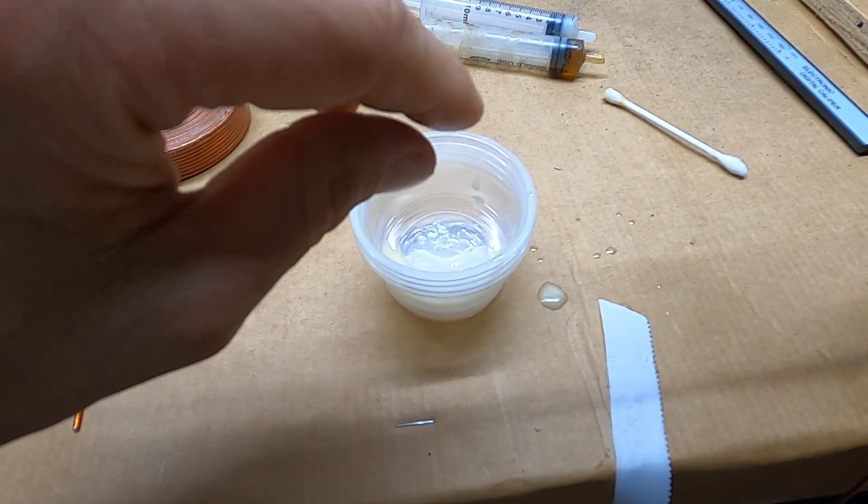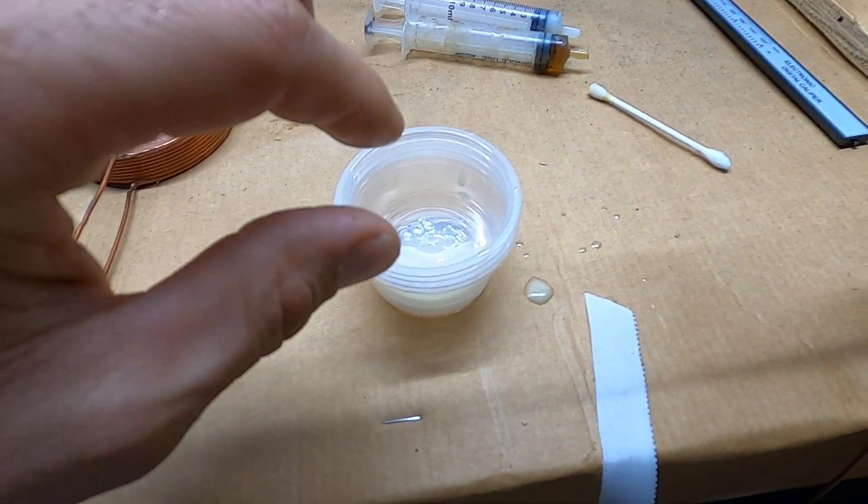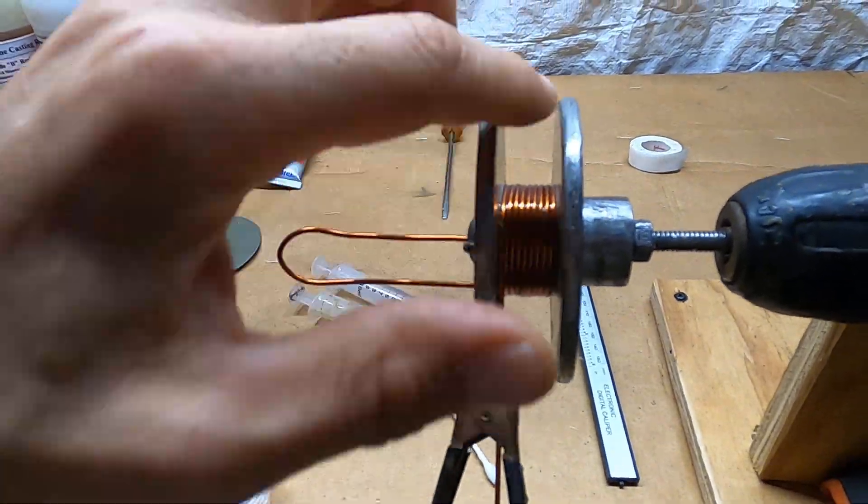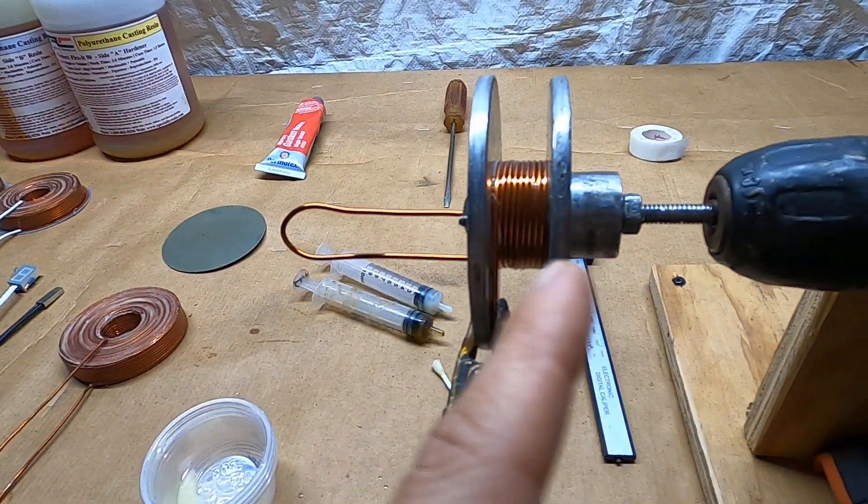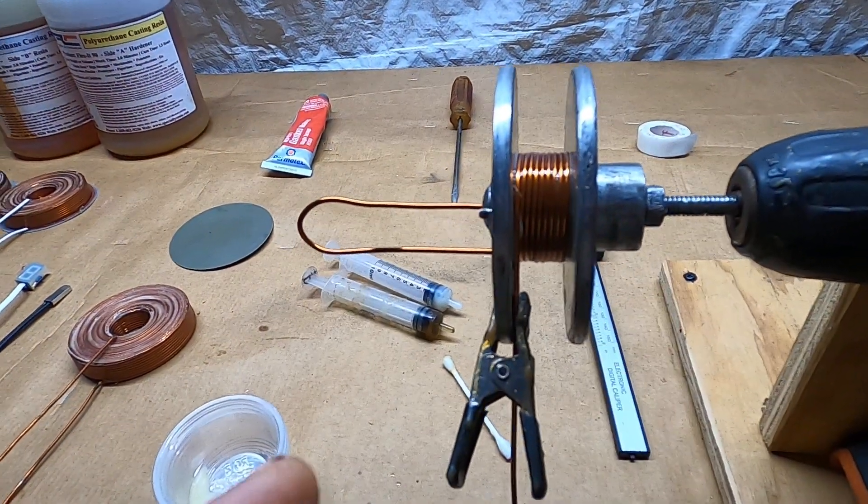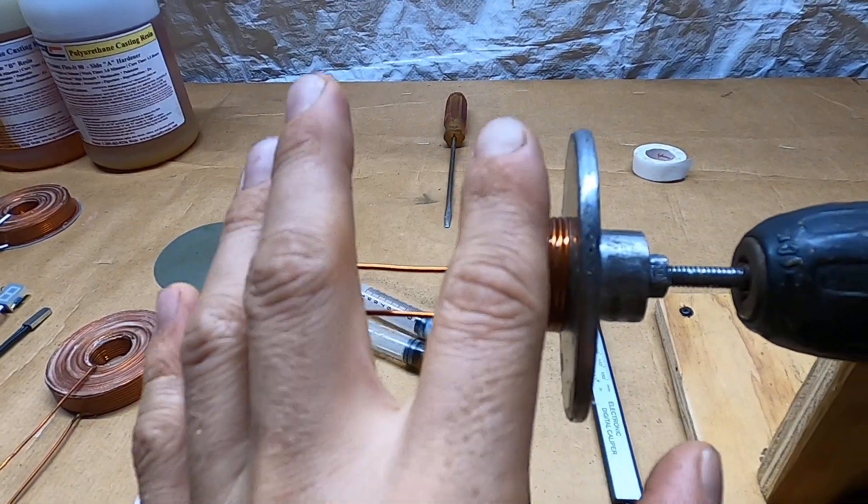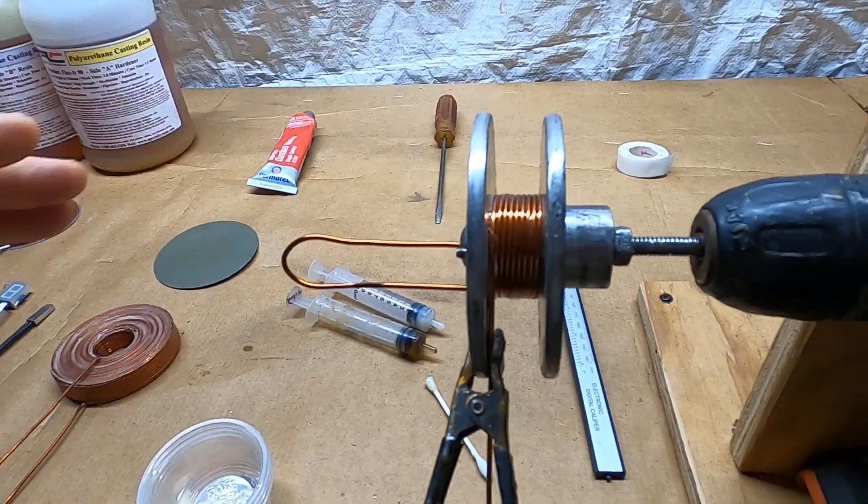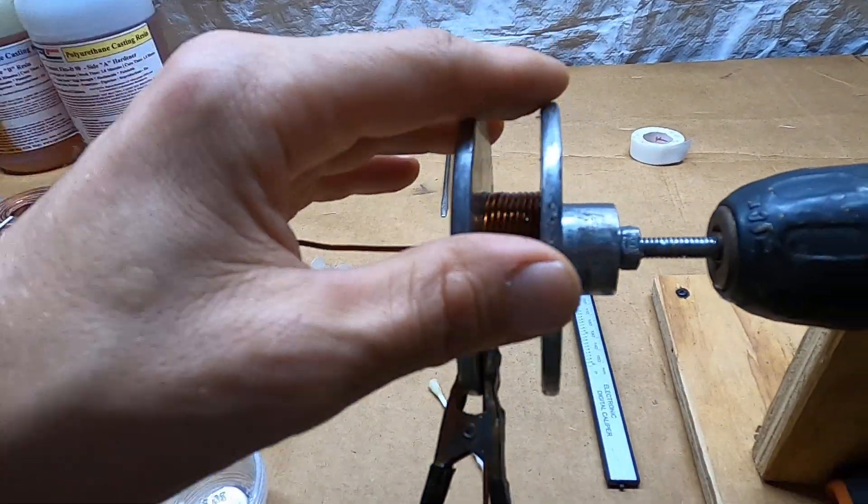Then I take this and I submerge it into here and I squeeze out the excess, just make it soaked. Then I install it over here over each layer and then I continue all the way until it's finished to the top. By that time it's going to be 15 layers.